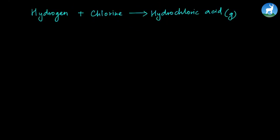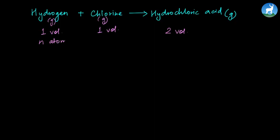Suppose we have hydrogen and chlorine. Hydrogen and chlorine combine to form hydrochloric acid. Suppose we have hydrogen one volume and chlorine one volume. So if we want to make a product, we will have the same number present. If we add hydrogen in one volume, we will present the same number.